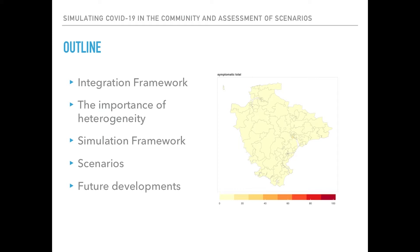We feed this into a SEIR model — an epidemiological susceptible, exposed, infected, and recovered model. I'll then talk about the importance of heterogeneity and how we incorporated information on individuals at the small area level. Then I'll give details of the simulation framework itself, and end with some results — scenarios on what would have happened if the first UK lockdown had been a week earlier, and some potential future developments.